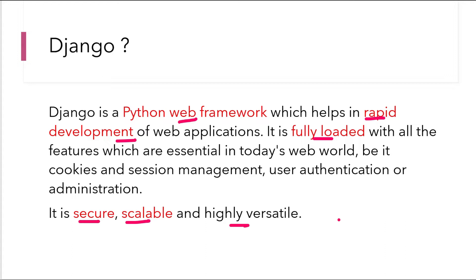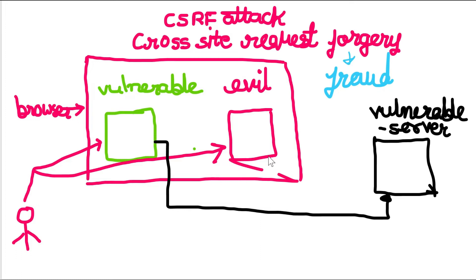Let's move to the next point, which is security. Nowadays cyber attacks on users and websites are very common, so it is important for a modern framework to provide security against such attacks. Let me give you an example of how Django is secure. There is one type of attack called a CSRF attack. CSRF stands for Cross-Site Request Forgery — forgery means fraud, and cross-site means there are at least two sites involved. So some other site is making a fraudulent request somewhere. This is called cross-site request forgery.